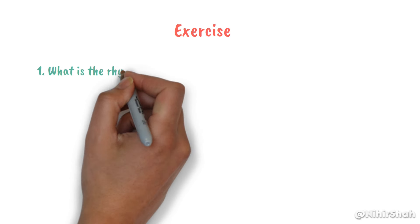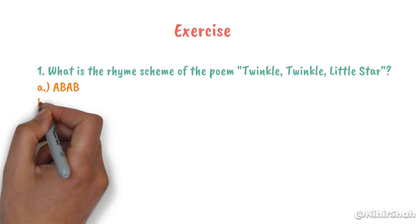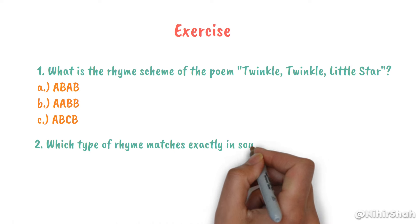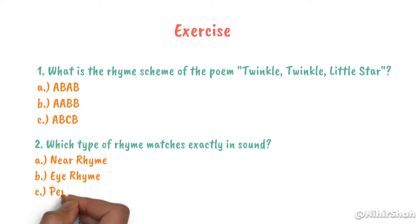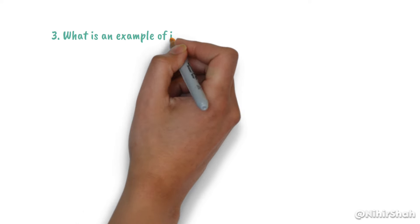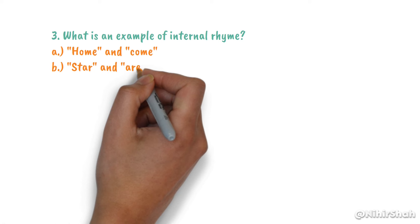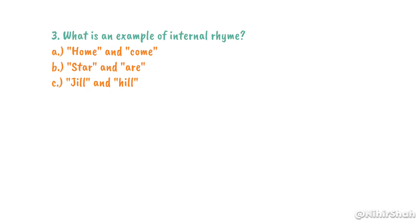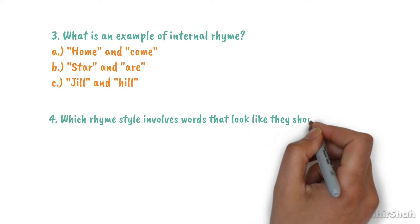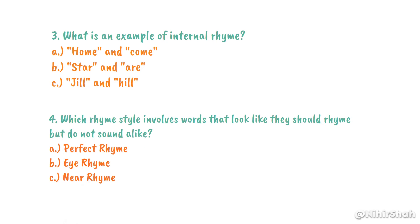Number 1: What is the rhyme scheme of the poem Twinkle Twinkle Little Star? ABAB, AABB, or ABCB? Number 2: Which type of rhyme matches exactly in sound? Near Rhyme, Eye Rhyme, or Perfect Rhyme? Number 3: What is an example of internal rhyme? Home and come, star and are, or Jill and hill? Number 4: Which rhyme style involves words that look like they should rhyme but do not sound alike? Perfect Rhyme, Eye Rhyme, or Near Rhyme?